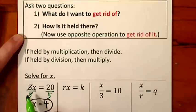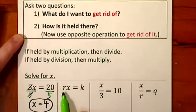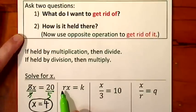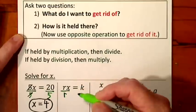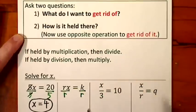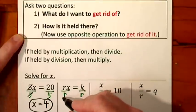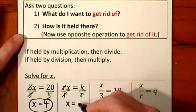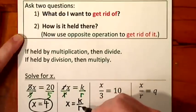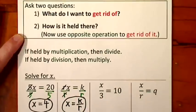This next equation is very similar to the previous one: r times x is equal to k. If I get rid of the r, I will have solved the algebraic equation because I will have x all by itself. R is held by multiplication — math shorthand: a variable next to a variable means to multiply. So the opposite operation is division. Divide by r, come to the other side of the equal sign, and divide by r. r goes into itself one time. I have 1x, or simply x, and it's equal to k over r. I have x by itself, so I've solved the equation.